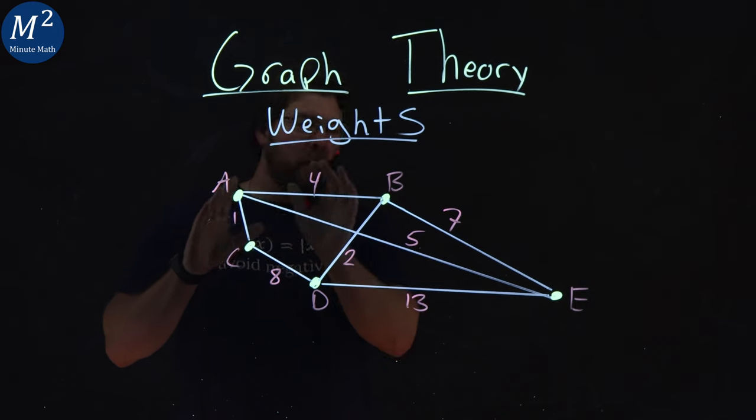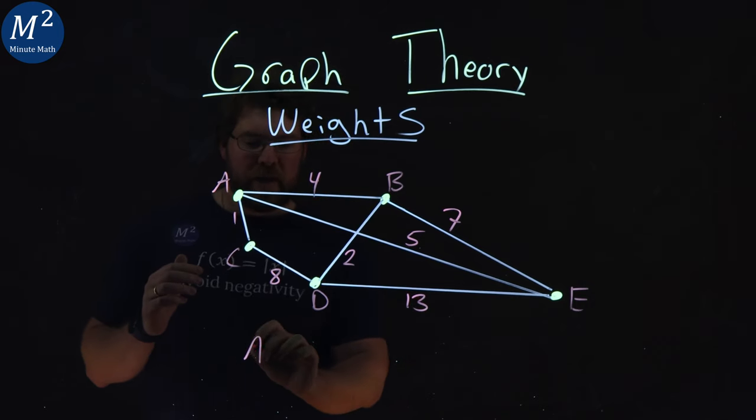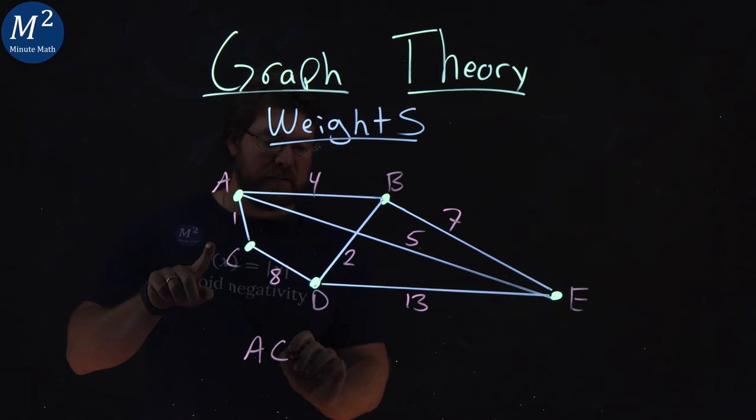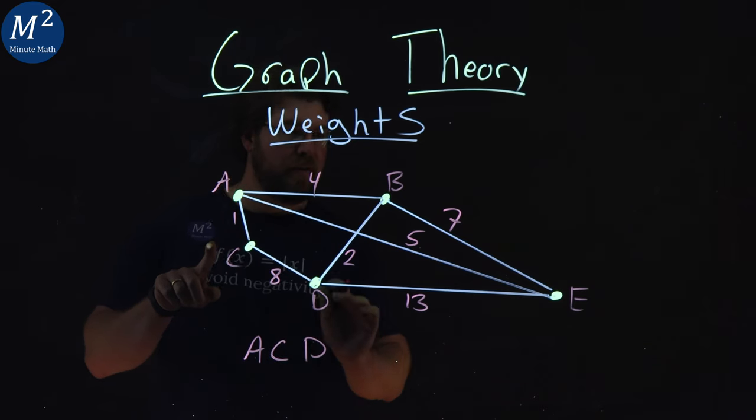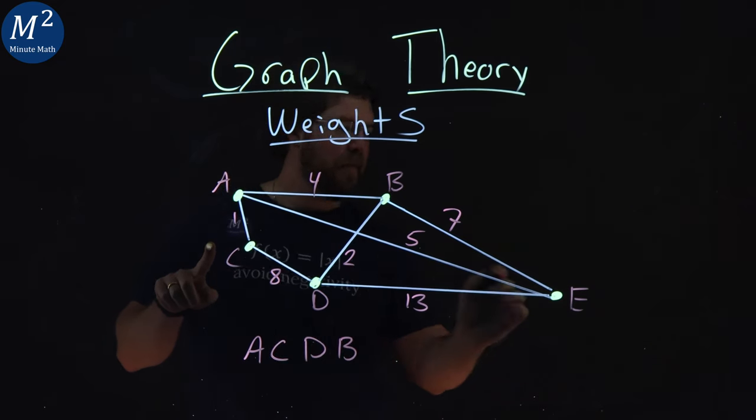So we can find the overall weight to go from A to E by going, let's say, A, C, D, let's go to B and then E.